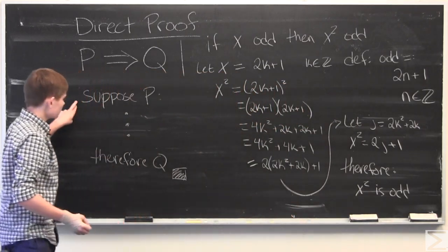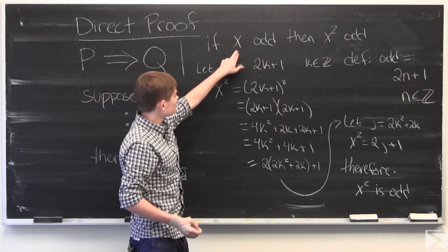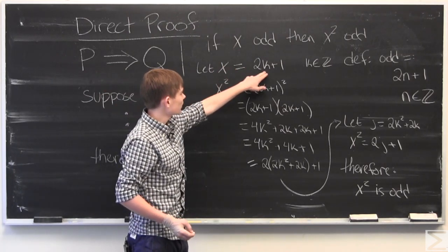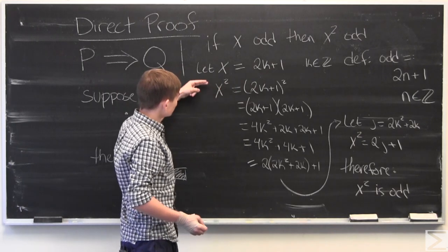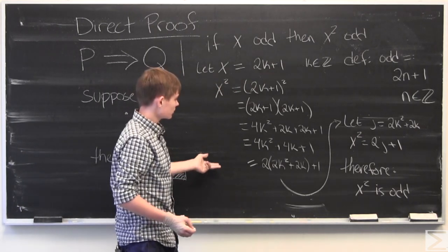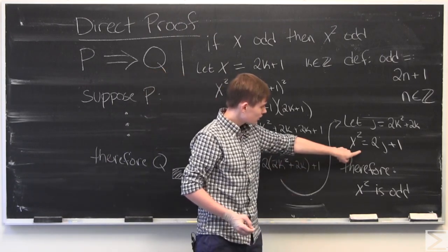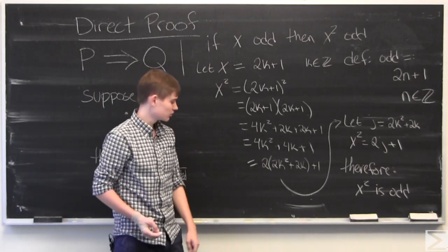And you can see this follows the same structure as what I gave here. We assume X is odd by defining it like so. We went through some basic arithmetic using this definition to arrive at X squared is odd.